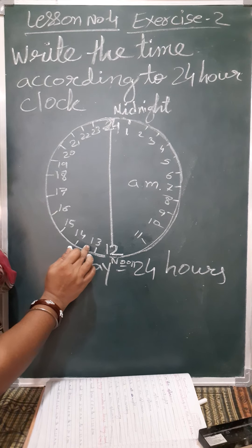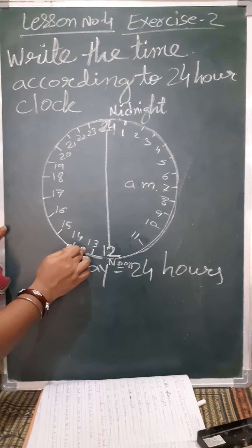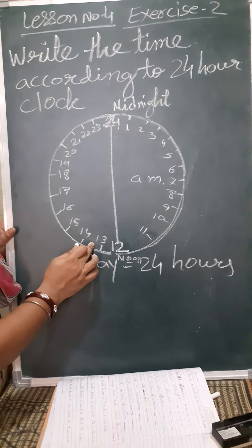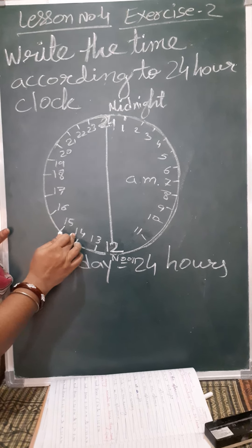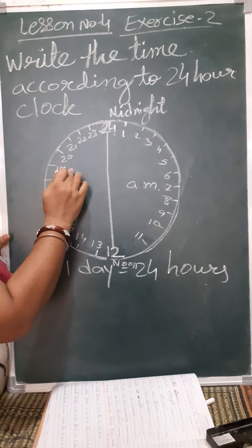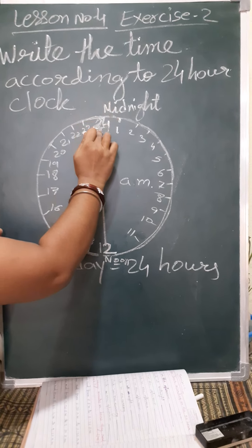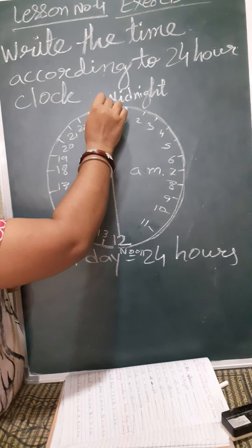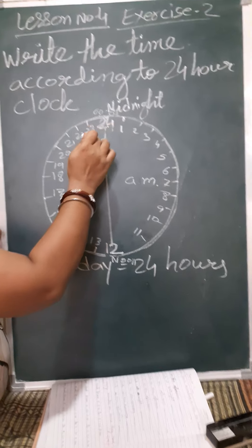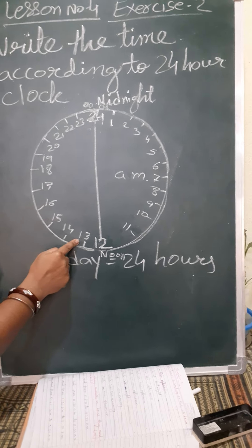After 12, we tell 1 o'clock in the afternoon. But in 24-hour clock, that 1 o'clock is read as 13. Then 14, 15, 16, 17, 18, 19, 20, 21, 22, 23. Again at midnight the 24 hours complete, and that is called 00 hours. So this 1 o'clock is called 13.